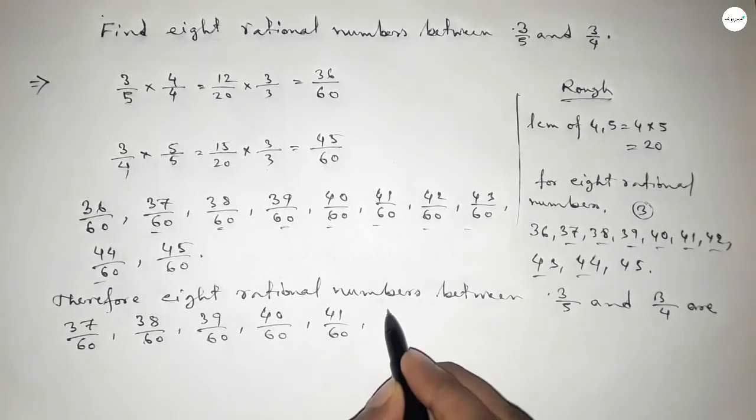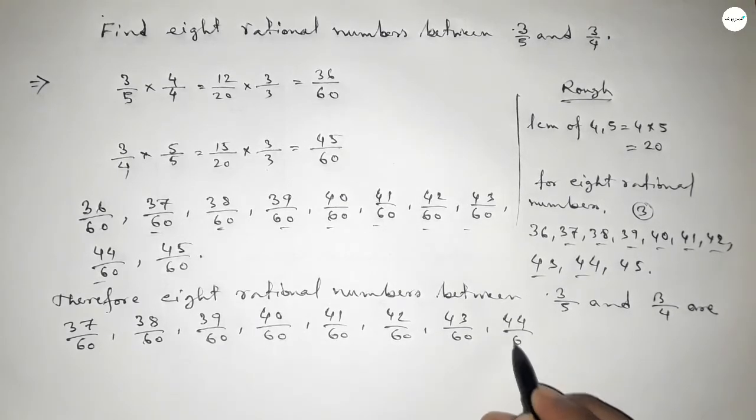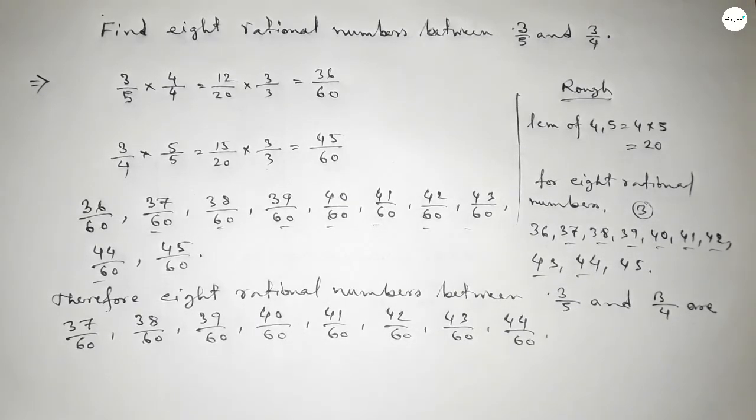So this is the process to find out eight rational numbers between 3 over 5 and 3 over 4. That's all, thanks for watching. If this video is helpful then...